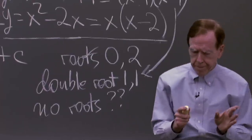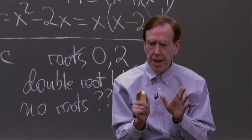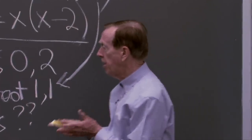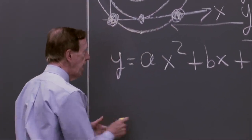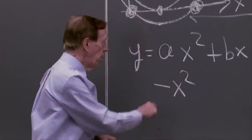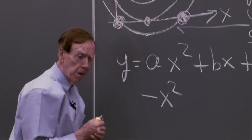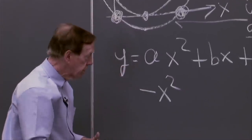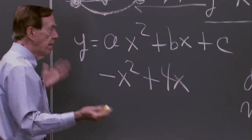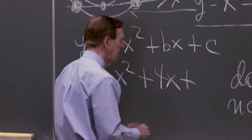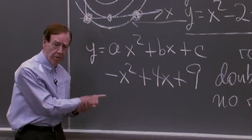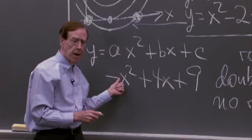Let me pause here and give you a chance to think about what to do. Maybe think of another example. Suppose I take a to be minus 1 — that will change the picture completely. With that minus sign, my quadratic is going to go downwards, like throwing a ball in the air and having it come down. And let me take 4x and c equal to 9. I don't know if that has any roots. Have a try and then I'll see you in a minute.